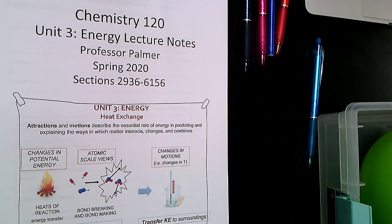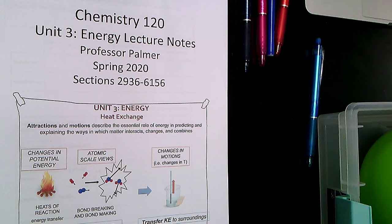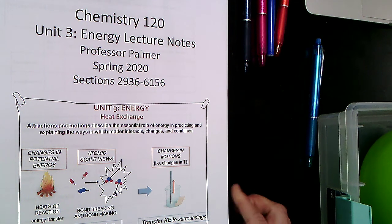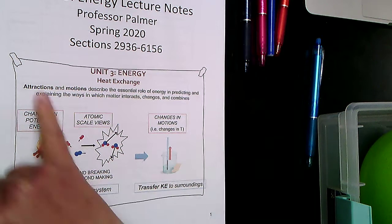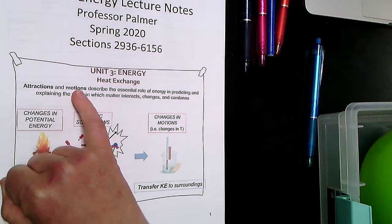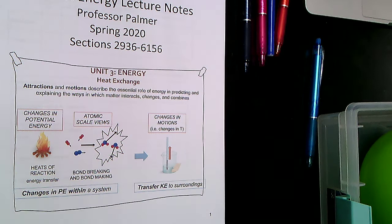Hopefully by now you've grabbed the Unit 3 reader from the bookstore, and we're going to just dive in. Unit 3 is all about energy. What we're going to be doing is taking the ideas that we've been building about attractions and motions, and thinking about those things in terms of energy changes.